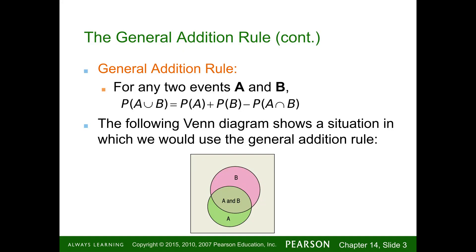The general addition rule for any two events A and B: the probability of A or B occurring accounts for overlap. For disjoint events, the Venn diagram shows two circles that don't overlap. In the non-disjoint scenario, there's overlap between event A and event B.